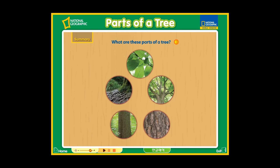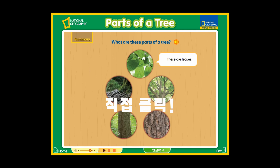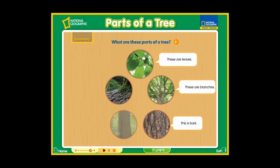Summary. What are these parts of a tree? These are leaves. These are branches. This is bark. This is a trunk. These are roots.